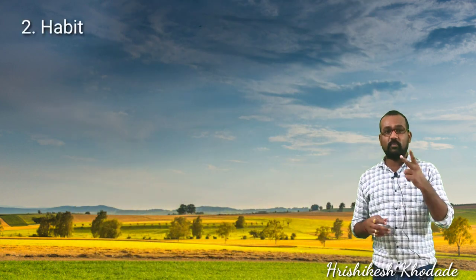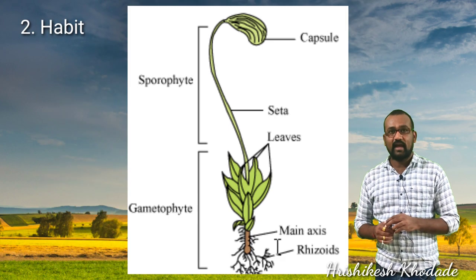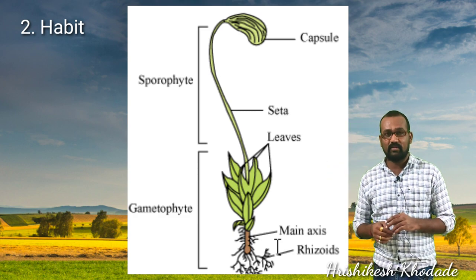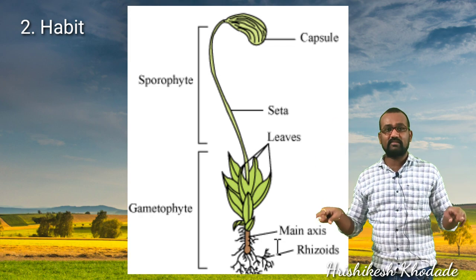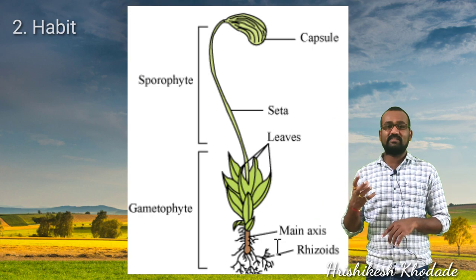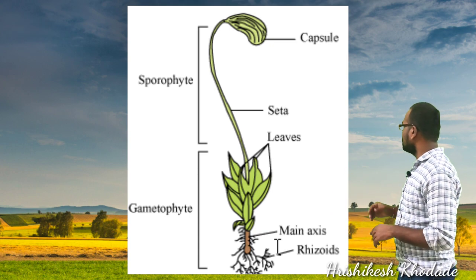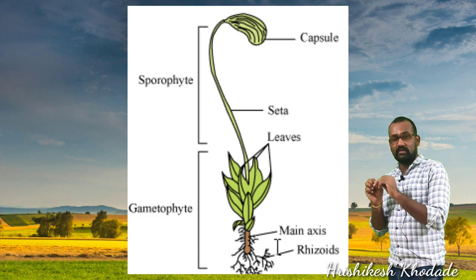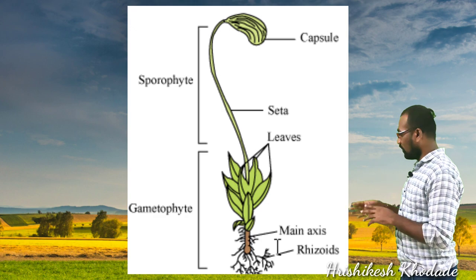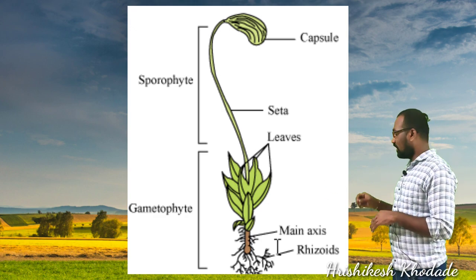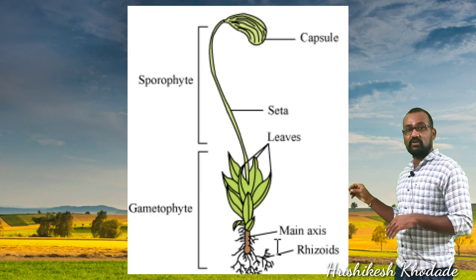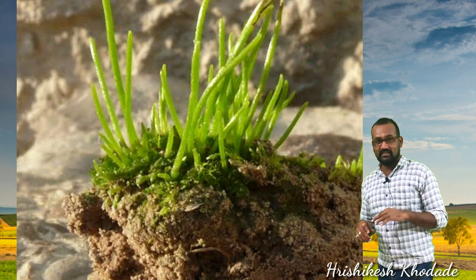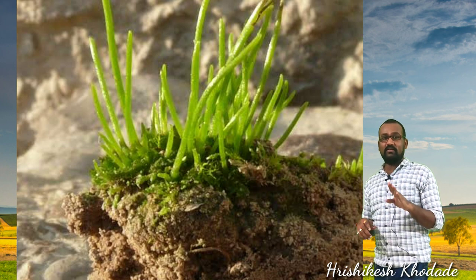The habit of bryophytes refers to their morphological or external appearance. In the image you can see that bryophytes contain smaller root-like portions and smaller leaf-like portions. The leaf-like portions are often dorsiventrally flattened, and the root-like portions are very minute, involved in absorption of water and giving support to the plant. However, they do not contain true roots and true leaves, which is a very important point to remember.